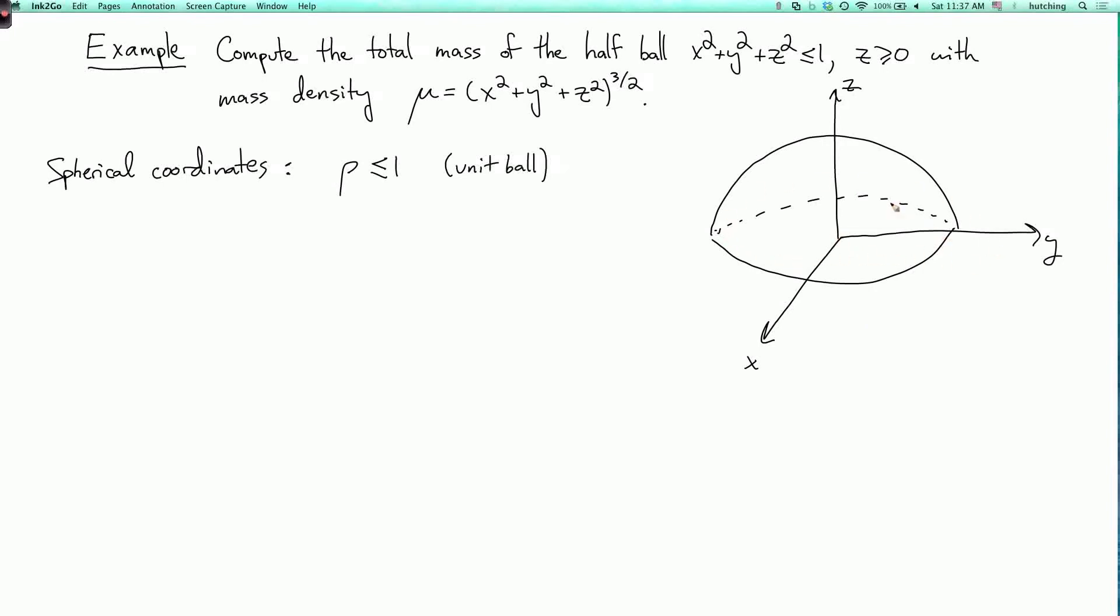And when we're in the xy-plane, phi is equal to pi over 2. The upper half space, where z is greater than or equal to 0, is where phi is between 0 and pi over 2. This is the upper half space.